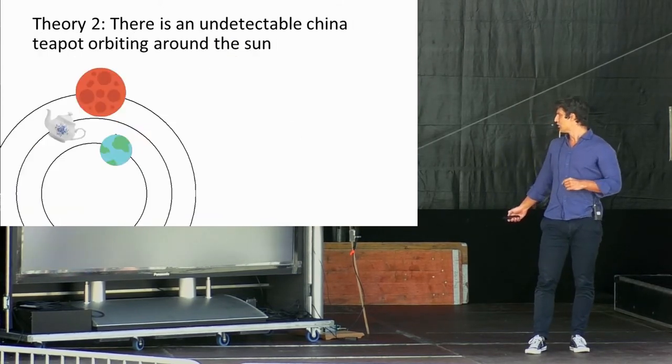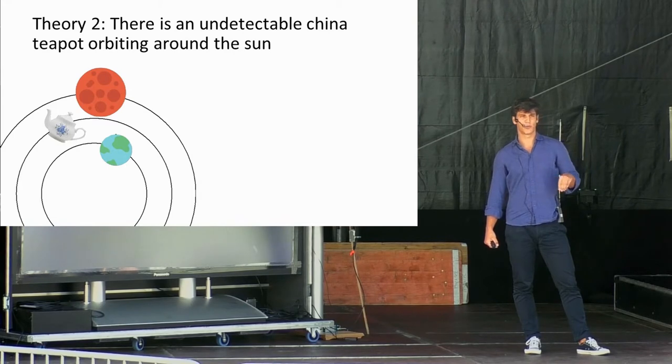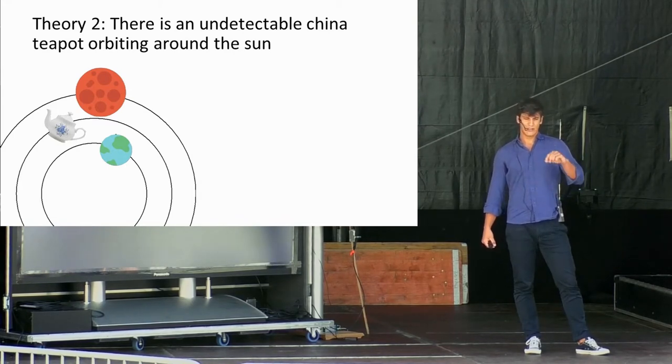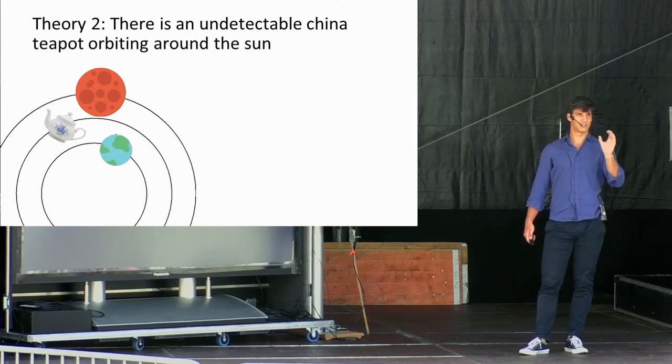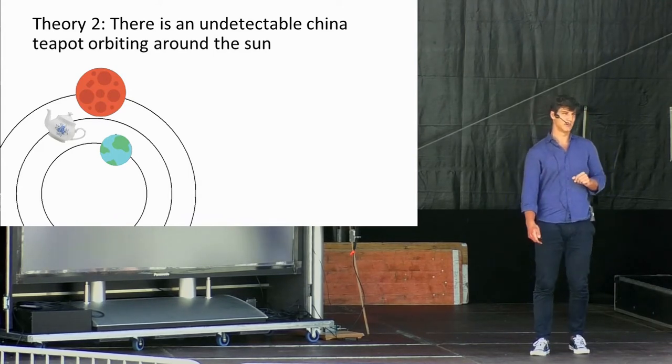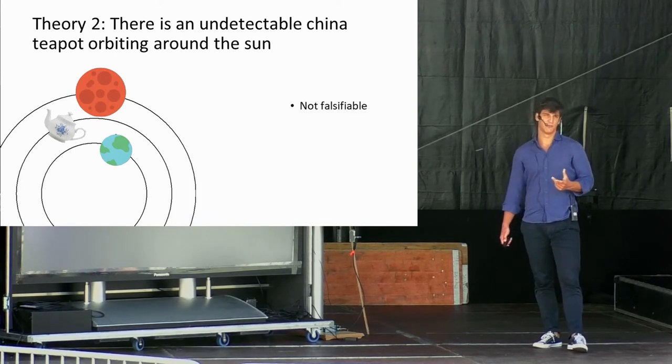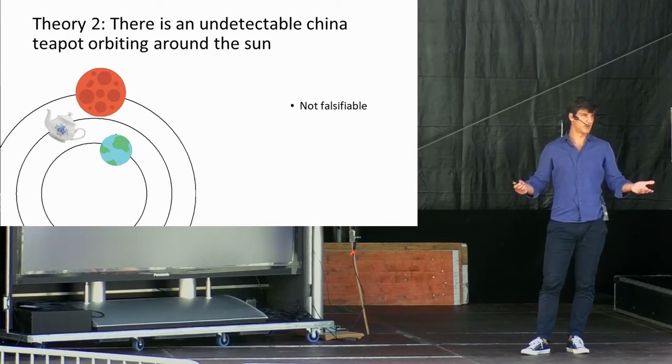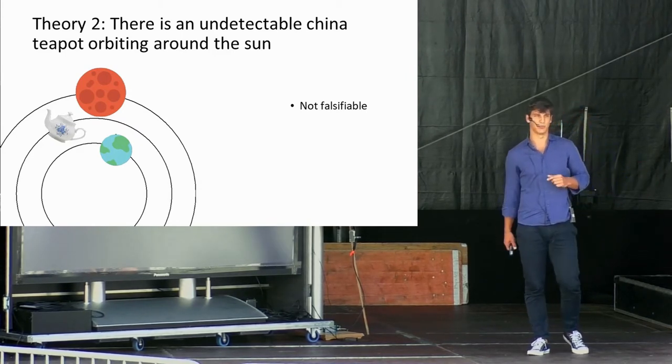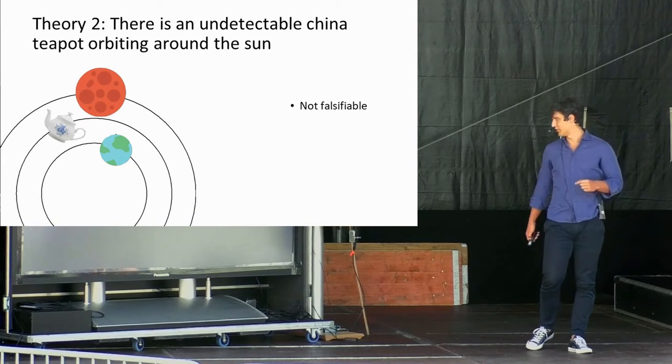Having a theory that is falsifiable makes it easier for us to justify and believe in such a theory. Let's now go to the other end. Let's take theory number two. Theory number two states that there is a China teapot orbiting around the Sun between Earth and Mars. Theory number two also states that this China teapot is undetectable by any telescope or technology known to humans. This is, of course, a problem, and this makes theory number two unfalsifiable, not falsifiable. Of course, we cannot detect the teapot if we have no instrument to actually see if the teapot is there. This makes it difficult to justify and believe in theory number two.